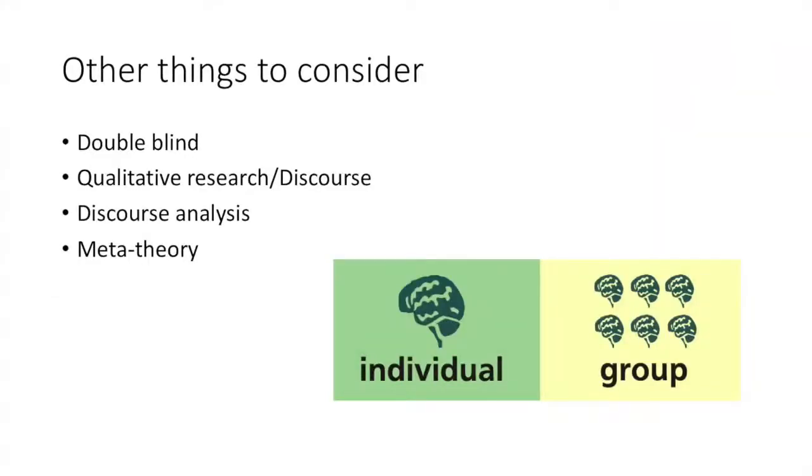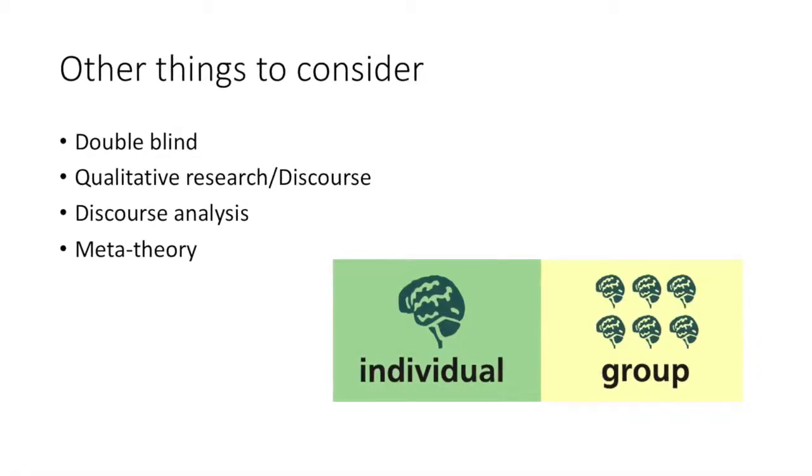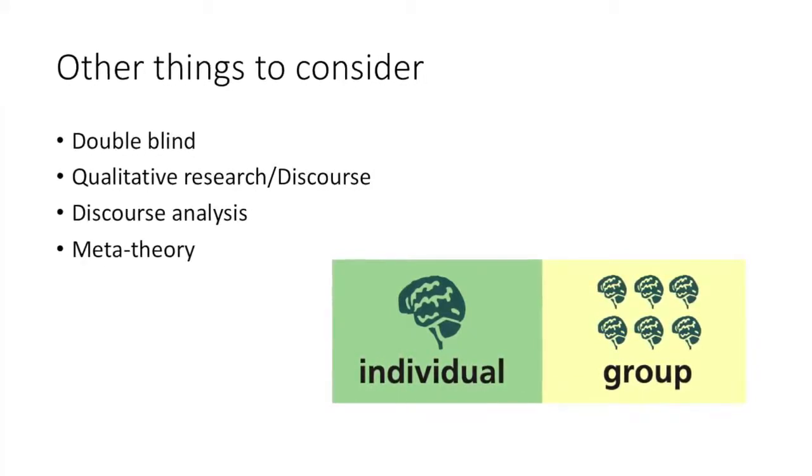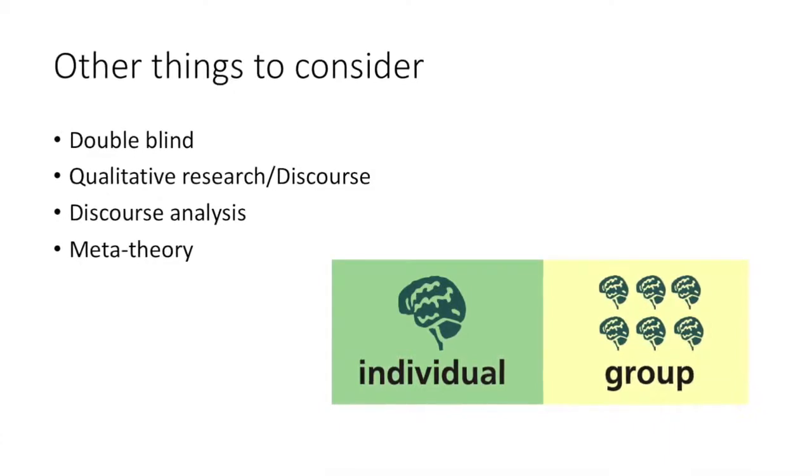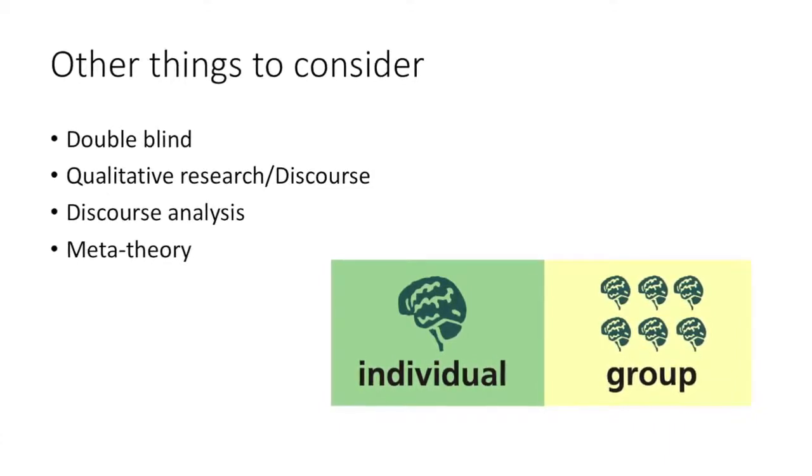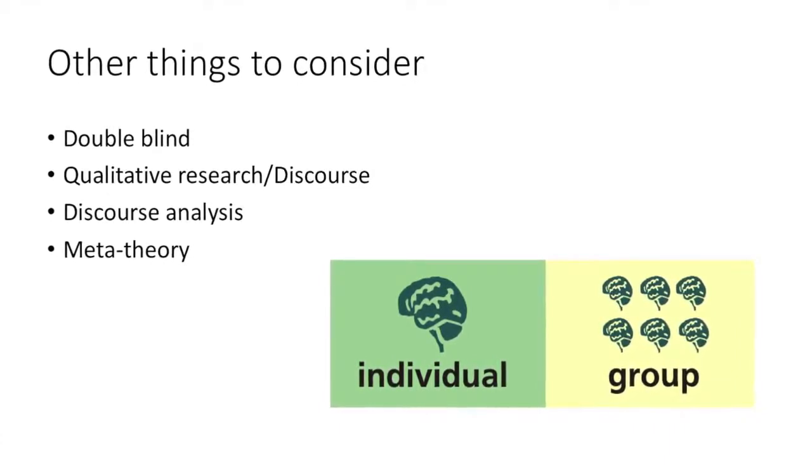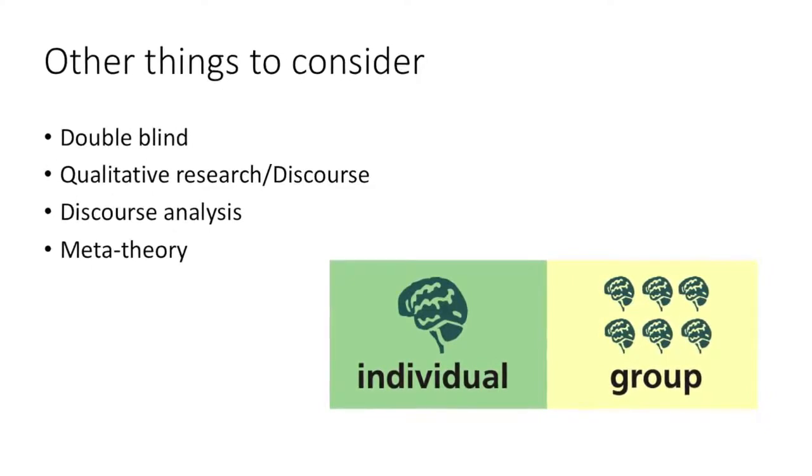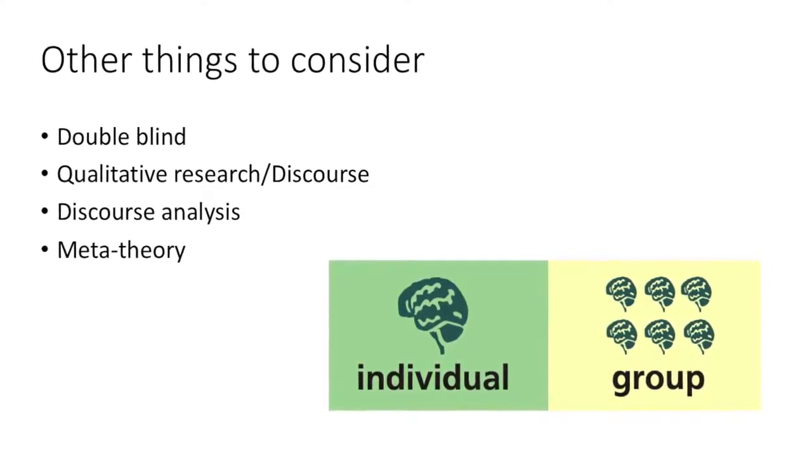Researchers have come up with ingenious ways to get around this problem through the double-blind procedure that reduces experimenter effects, since the experimenters themselves are unaware of the experimental conditions or the context behind it and are merely pawns used by other experimenters.